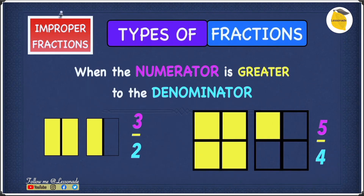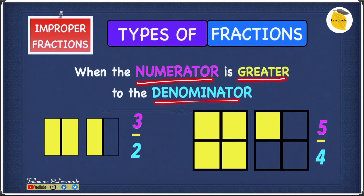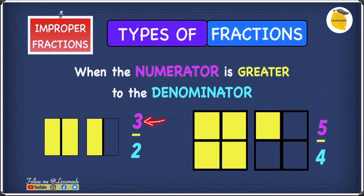Now, let's have a look at the second type of fraction, which is improper fractions. Improper fractions is when the numerator is greater than the denominator. So over here, the numerator is the one on top, the denominator is the one on the bottom. The numerator is 3, and we know that 3 is greater than the denominator, which is 2. So 3 over 2 is an improper fraction.